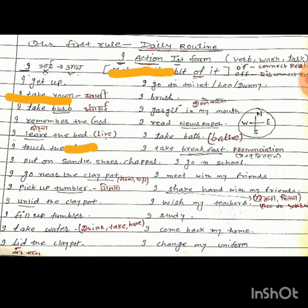मैं चप्पल पहनता हूँ, जूते पहनता हूँ, या सैंडल पहनता हूँ. 'Put on' means पहनना, so the sentence is: I put on sandals/shoes. मैं मटके के पास जाता हूँ — 'go' means जाना, 'near' means नज़दीक, and 'claypot' means मटका. So: I go near the claypot.